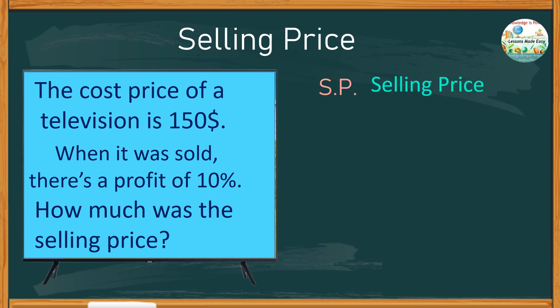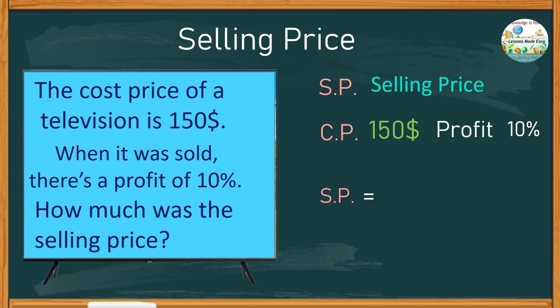Let's try this method first. Identify the facts in the given problem: cost price is 150, sold at a profit of 10 percent. To find the selling price, we take the cost price of 150 multiplied by the profit factor, which is 100 plus 10, giving us 110 over 100.